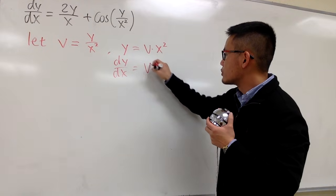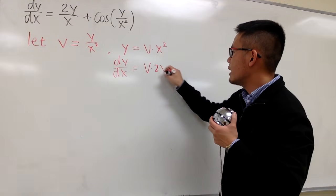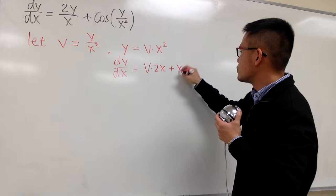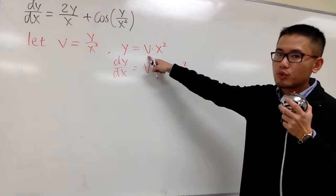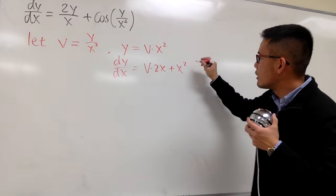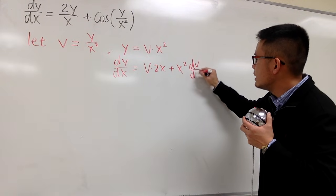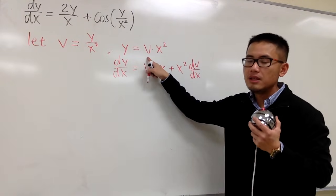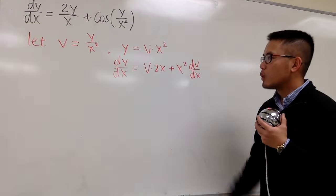So I will keep the first function, I'll multiply by the second, so I'll have 2x, and then add it with the second function, which is x squared, and then multiply by the derivative of the first, which I will put down dv/dx, because once again, v is a function of x. So this is what we have.